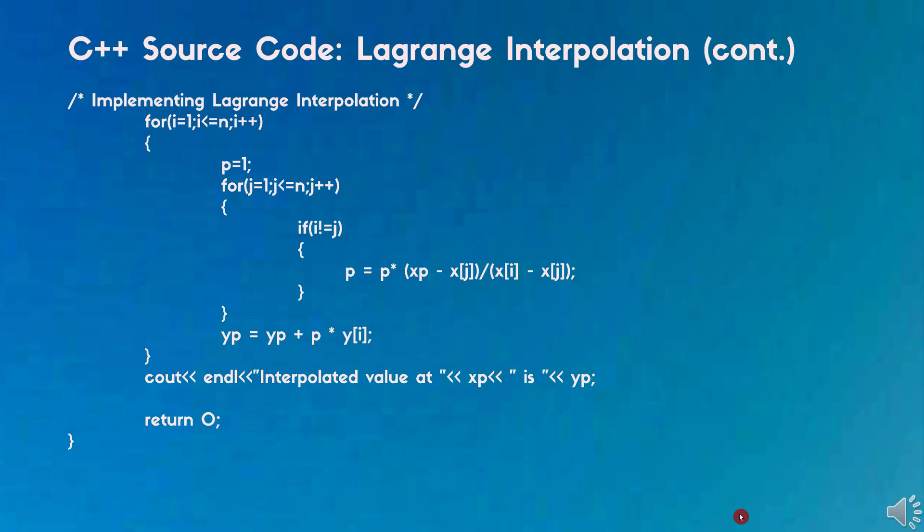yp equals yp plus p times yi. After getting the value we are displaying the value and then return 0, then the program will end.